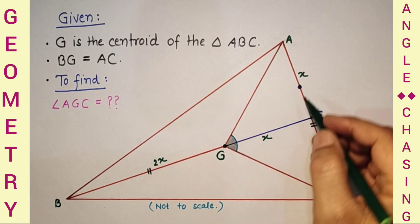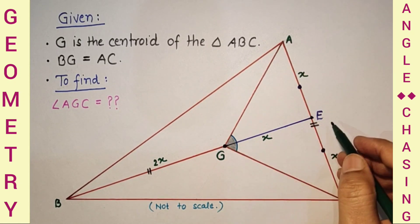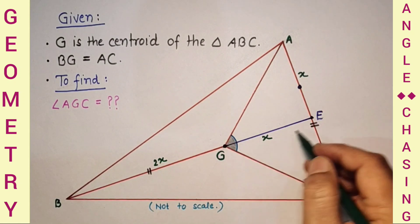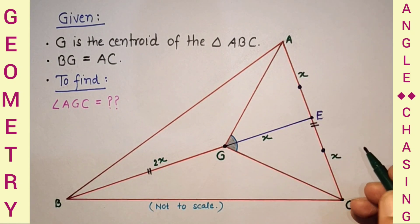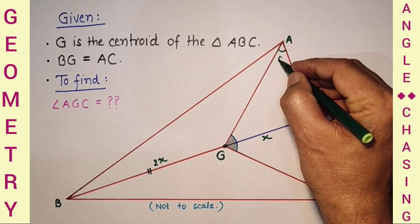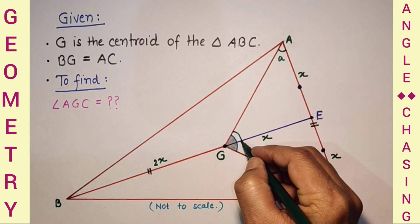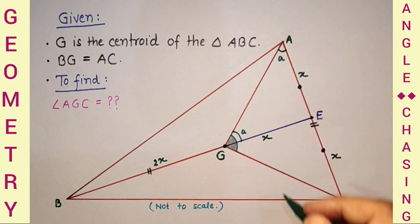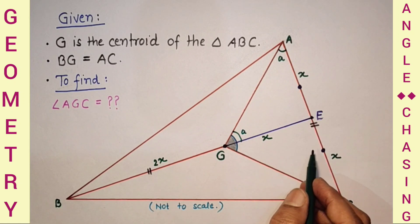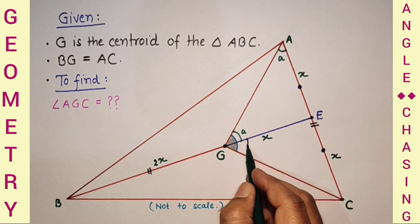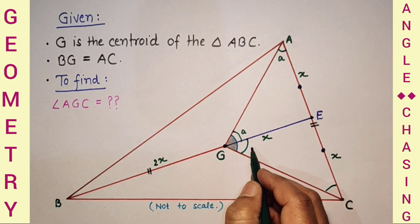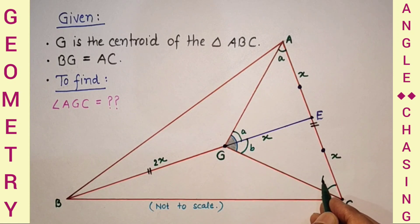Since these two line segments AE and GE are each equal to X, triangle AGE is isosceles. If this base angle is A, then the other base angle will also be A. Similarly, since GE and EC are each X, triangle GEC is also isosceles. If this base angle is B, then the other base angle will also be B.